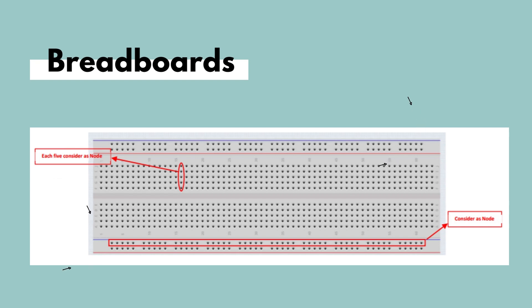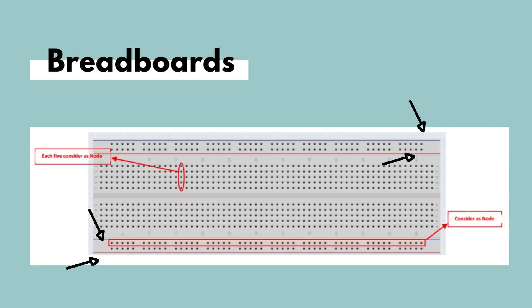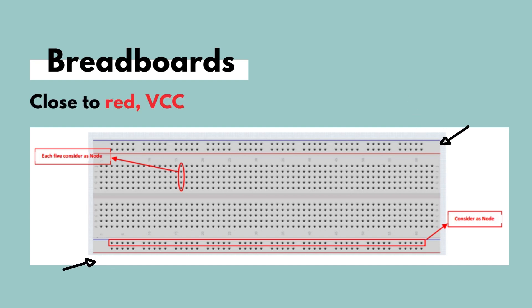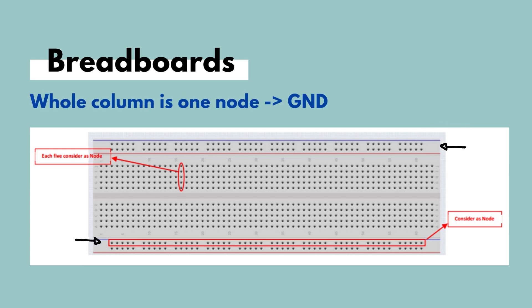The two outer columns are bounded by two lines — one that is blue and the other that is red. Breadboards come in different types and color notations. Usually the column closer to the red is used to represent VCC, and the column closer to the blue, which sometimes can be black, represents the ground. The whole ground column can be considered as a node, and similarly for VCC, the whole column can be considered as a node.